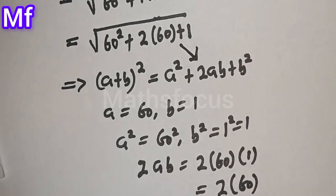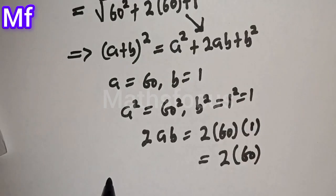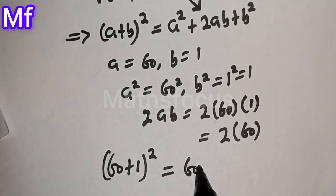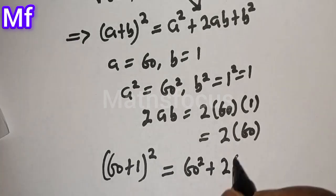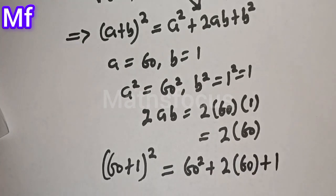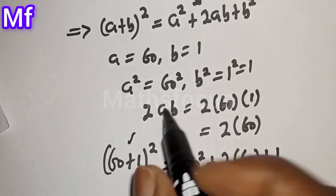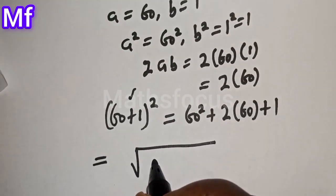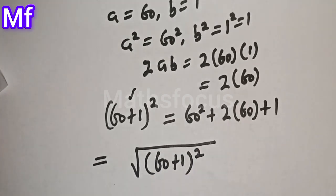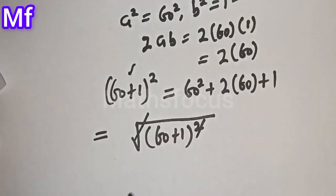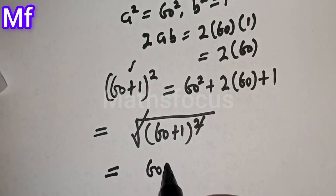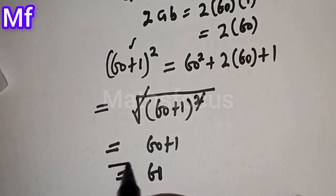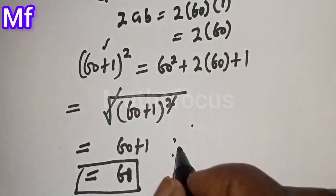Therefore, we have 60 plus 1 squared, which is equal to a squared — that is 60 squared — plus 2 times 60 times 1. We can substitute this into the root, giving us square root of 60 plus 1 squared. This is equal to 60 plus 1, which is 61. This is the final answer.